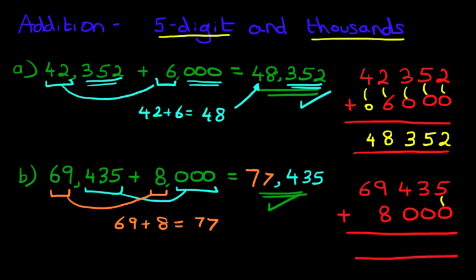Now 5 plus 0 is 5. 3 plus 0 is 3. And 4 plus 0 is 4. Now we're going to add the thousands. 9 plus 8 is 17. So let's write this down: 1 over here and 7 over here. Now we're going to add the ten thousands. We've got 6 plus 0 plus 1. So 6 plus 1 is 7. So our answer is 77,435.